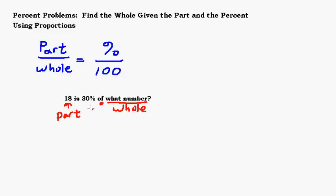We know the 18 is the part, the whole we don't know, and we know the 30%. Let's set this up with a proportion. The part over the whole is 18 over question mark, equals our percent over 100, which is 30 over 100.